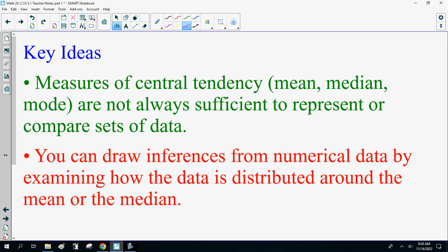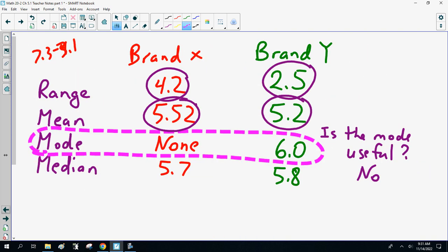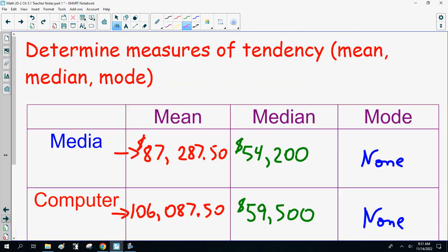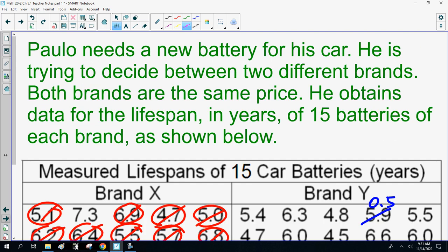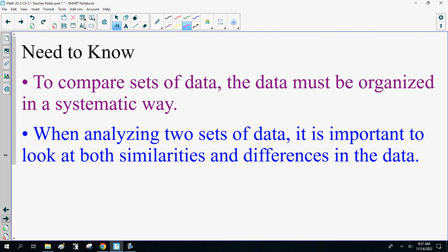Let's get this over with. The key idea is what I've been trying to talk about today. Measures of central tendency, the mean, median, mode, are not always sufficient to represent and compare sets of data. You can draw inferences from numerical data by examining how the data is distributed around the mean or the median. This goes back to the various companies here, how the mean was affected by the outliers. What you need to know to compare sets of data, the data must be organized in a systematic way, in order. And when analyzing two sets of data, it's important to look at both similarities and differences. How are they the same? How are they different?